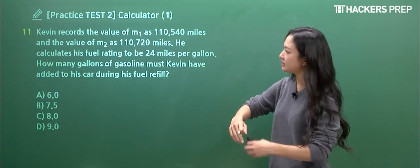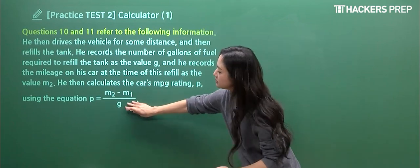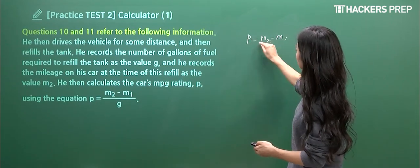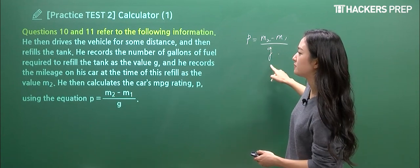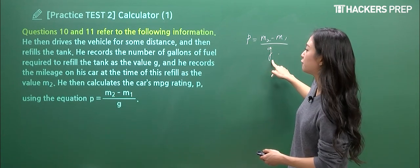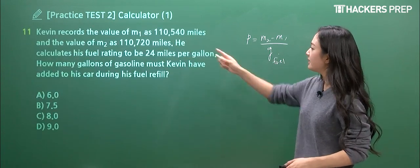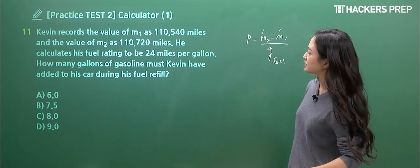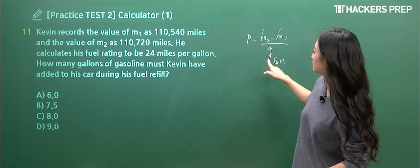So question number eleven, it seems very complicated but at the end it's just going to be using this equation. So let me just rewrite this here. And remember what the variables mean, that's the fuel that we need to add. So when you go back to question number eleven, M1 they give you the explicit value, M2 is also presented, and he calculates the fuel rating to be 24. What's G?